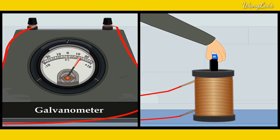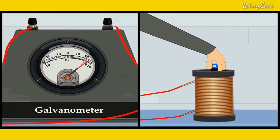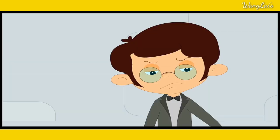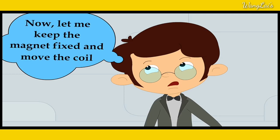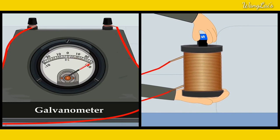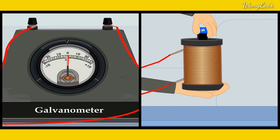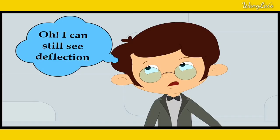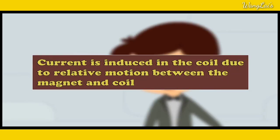Let's get rid of the magnetic chain, which is called the magnetic chain. The current is induced in the coil due to the relative motion between the magnet and the coil.